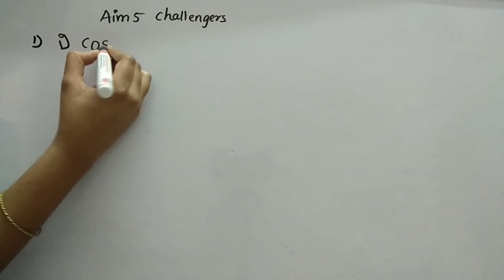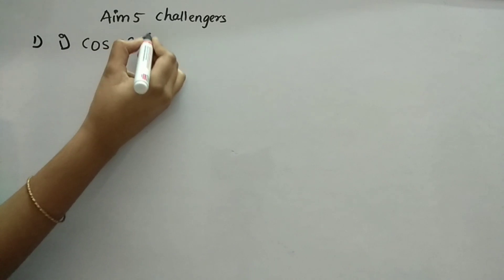This aim actually deals with the allied angles. Let's start the first bit. First question says that we have to find the values of the following: cos 585 degrees is the first question.